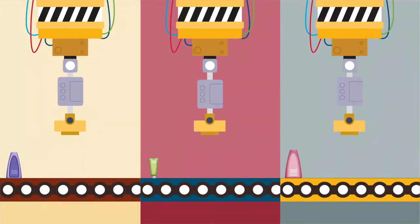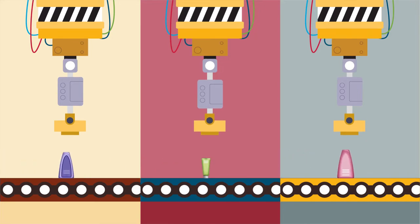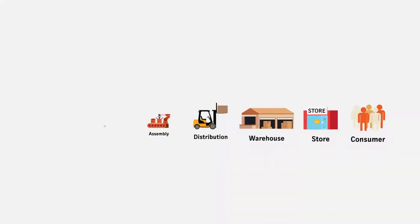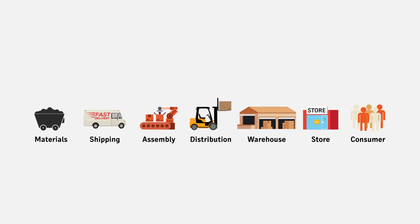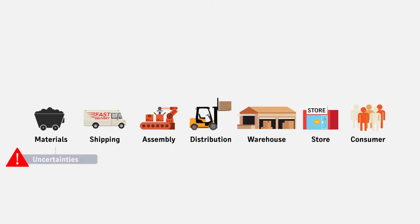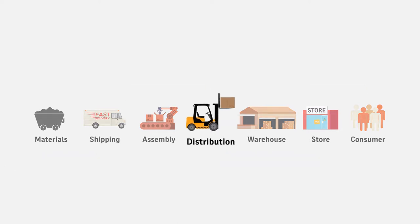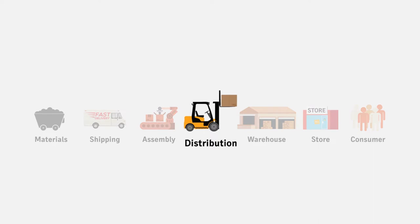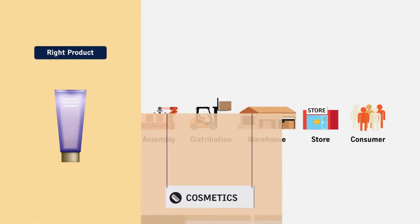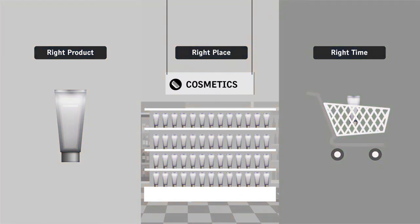Organizations need their supply chain to be increasingly adaptive to stay competitive and to meet changing customer needs and retail models. Many organizations operate very siloed supply chains and suffer from the bullwhip effect, where the patterns of demand from the consumer are amplified up the supply chain because of uncertainties, poor communications, order and batch sizes, and safety stocks. Fulfillment focuses on integrated supply chain distribution planning and recommends replenishments with the goal of placing the right product in the right place at the right time.